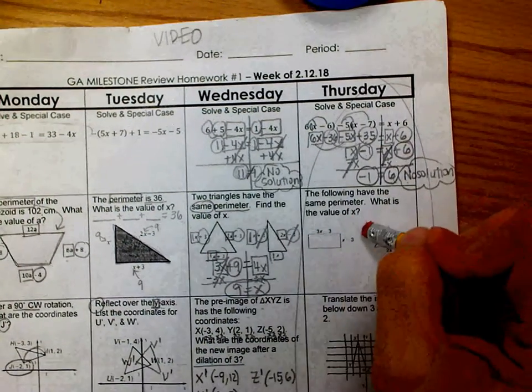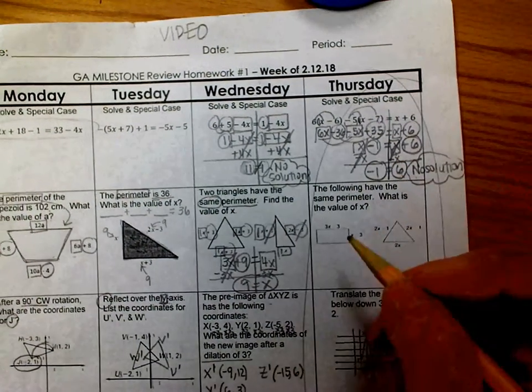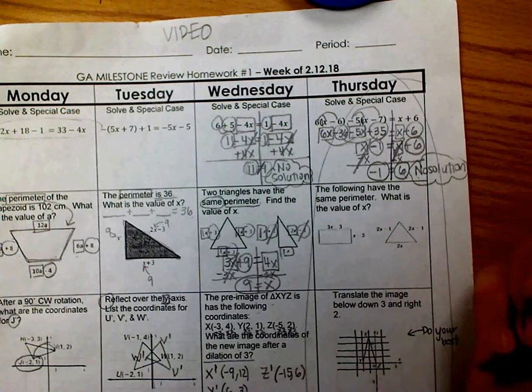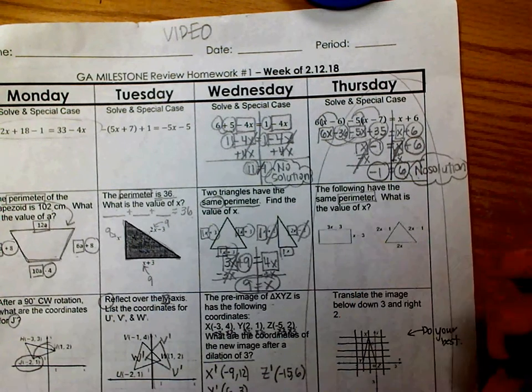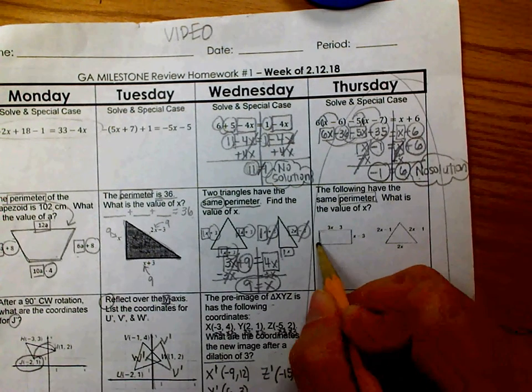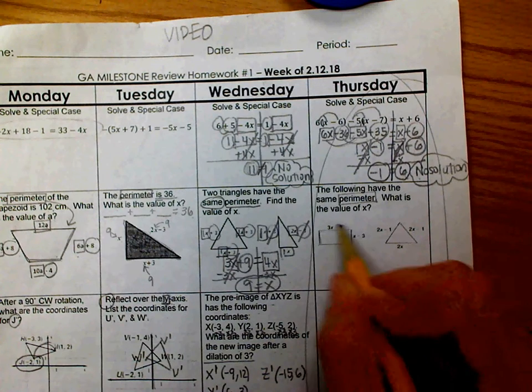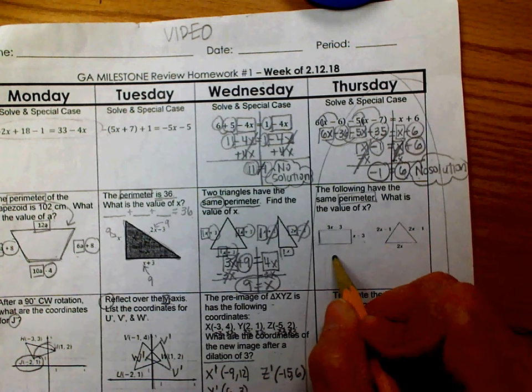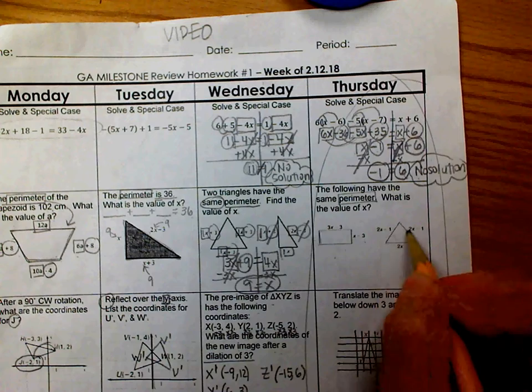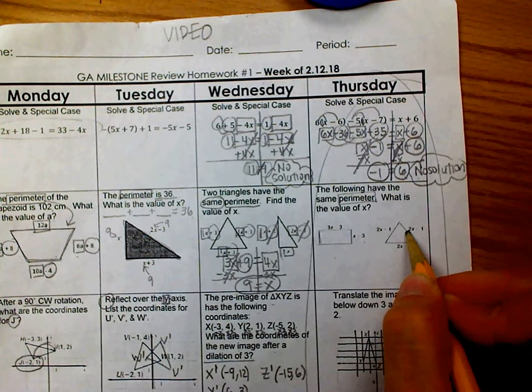Okay, now this one, guys, the following have the same perimeter. What is the value of x? Okay, so perimeter means the distance around. Now, this is a four-sided figure, okay? So, you should be able to add four things. But I only see two things labeled, which means I need to find out what these other two sides are. Here is a three-sided figure, so I'm going to be adding up the three sides.